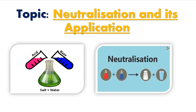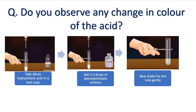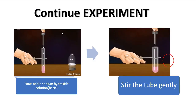To understand it in a better way, let us do an experiment to find how acids and bases actually neutralize each other's effect. For this experiment we need hydrochloric acid, phenolphthalein solution, and a basic solution. In the first step, we take dilute hydrochloric acid in a test tube. Then we add two to three drops of phenolphthalein solution and shake the test tube gently. Do you observe any change in color? No — it is colorless; there is no change.